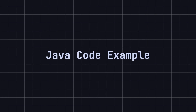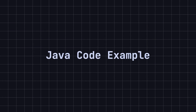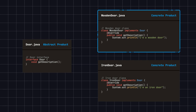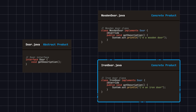To better understand this pattern, let's continue with the door example and demonstrate the abstract factory pattern using Java. We will create two factories that produce different types of doors and provide the corresponding installers. First, we define the door interface and its two concrete implementations: wooden door and iron door. In the UML class diagram, door is the abstract product and wooden door and iron door are the concrete products.